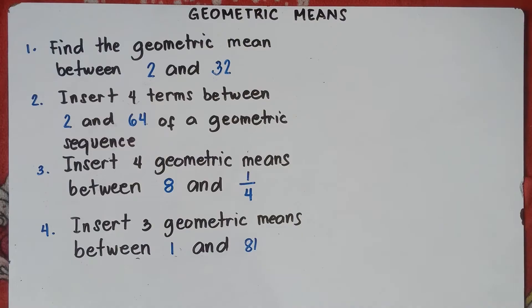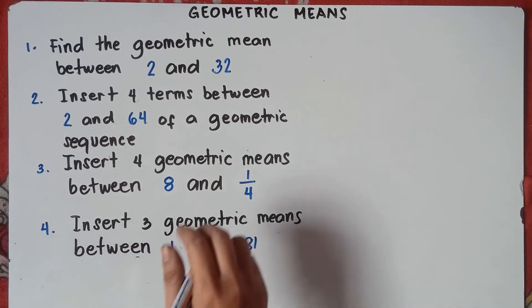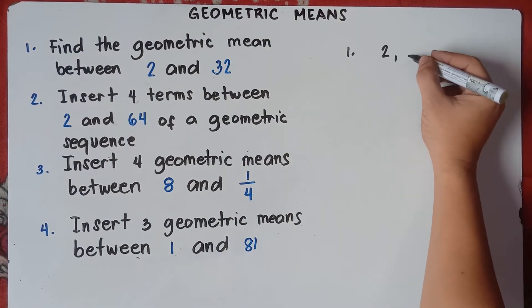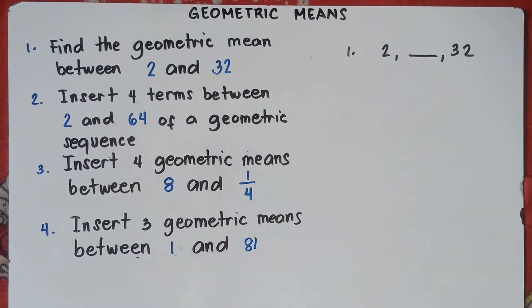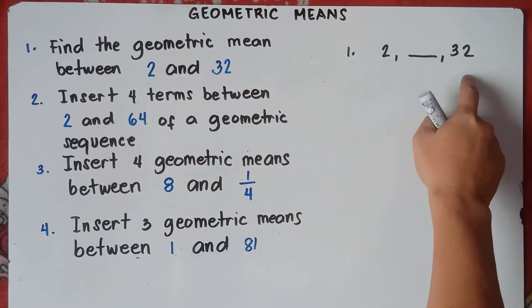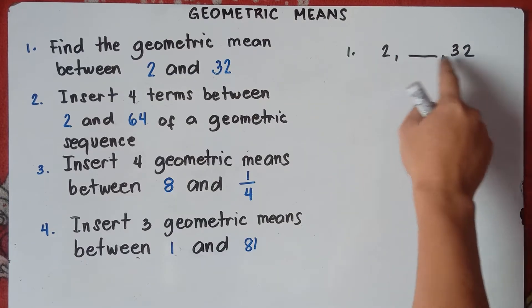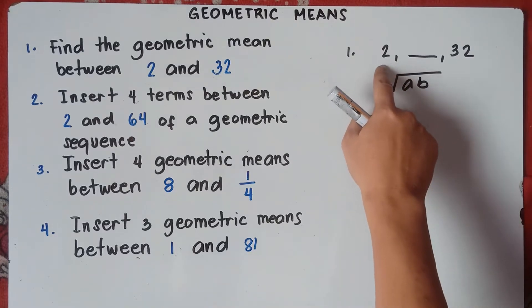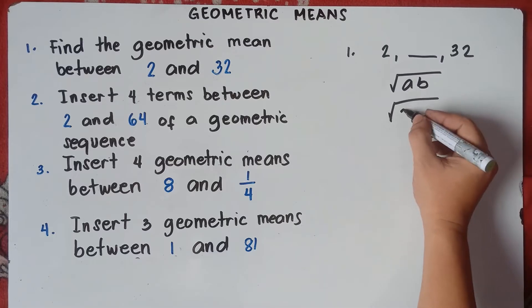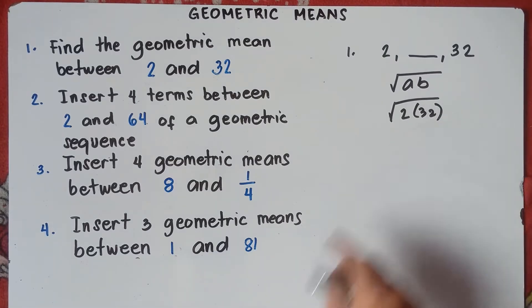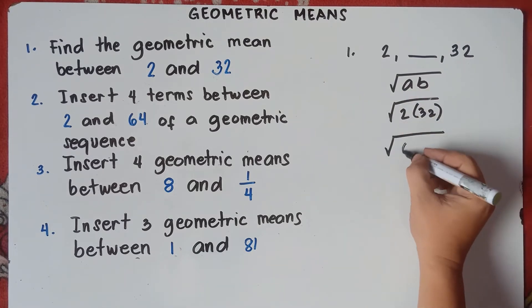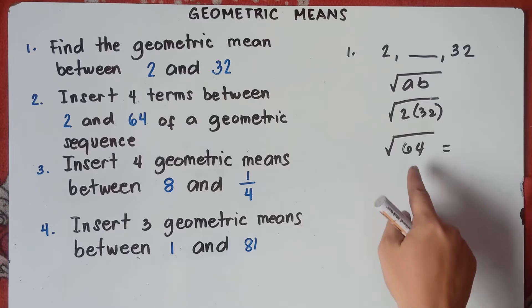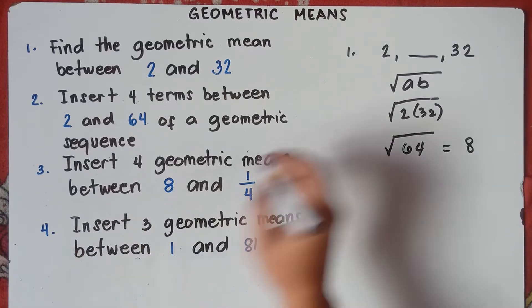Let's deal first with the basics. Number 1: find the geometric mean between 2 and 32. You are told to find one number between 2 and 32. That's very easy. Our formula is the square root of A times B. Our A is 2, the first term, and B is 32, the last term. So the square root of 2 times 32. 2 times 32 is 64, and the square root of 64 — you think of a number that when multiplied by itself gives 64 — that would be 8. Our answer is 8 for number 1.